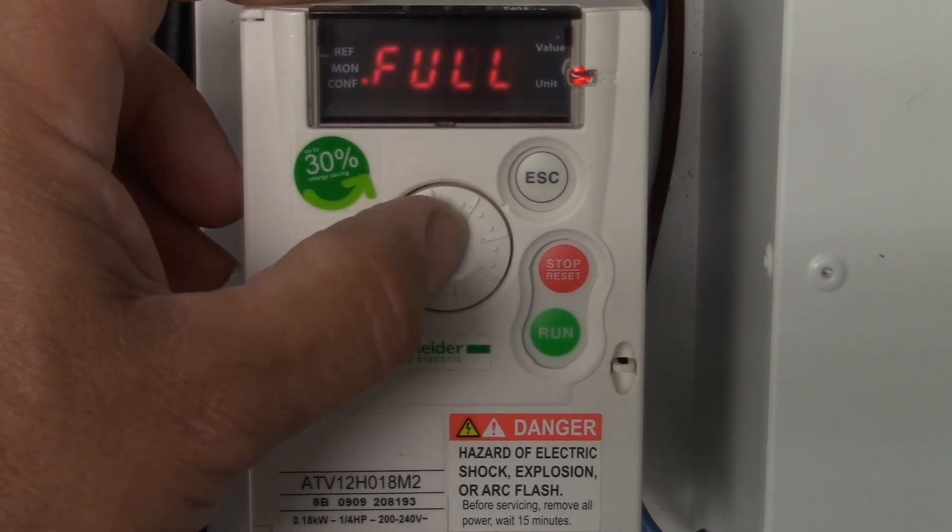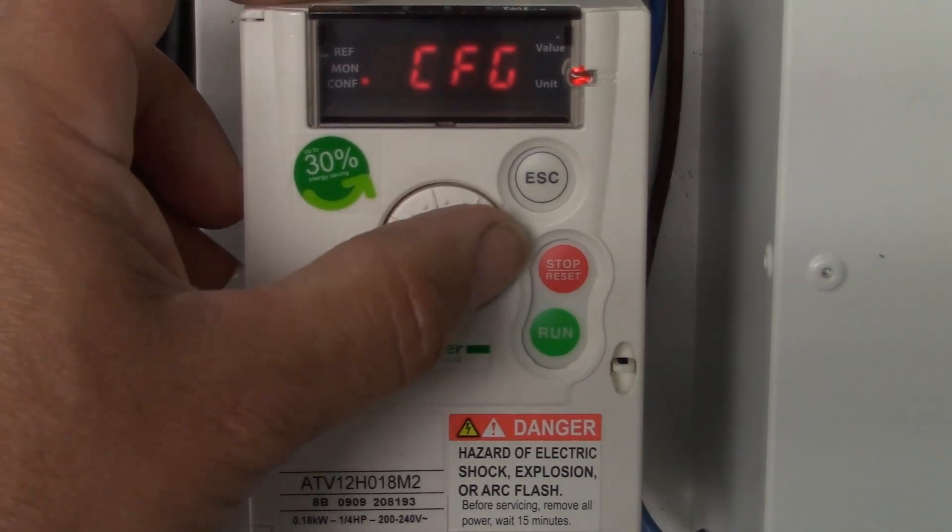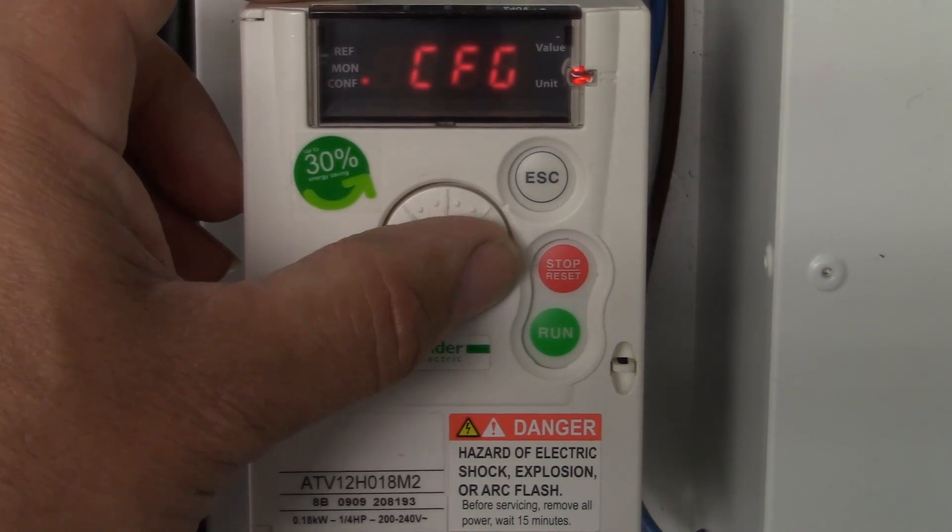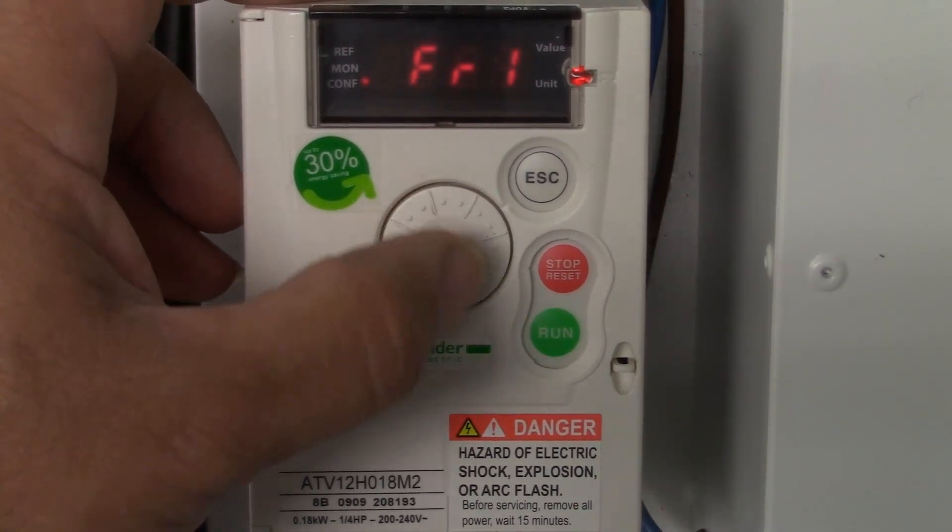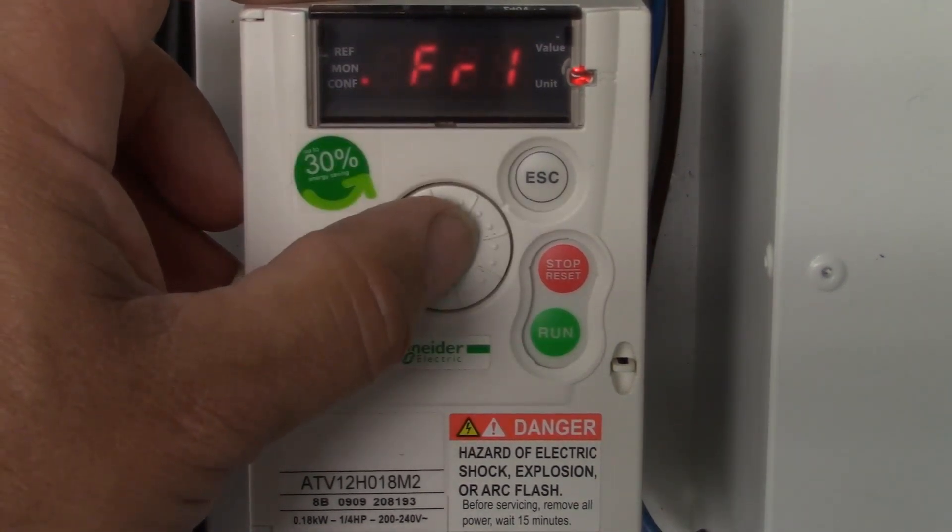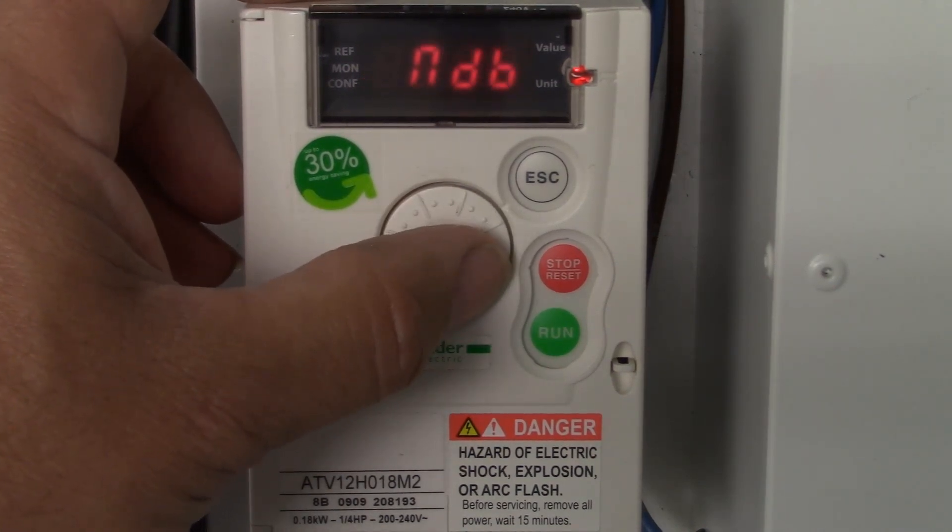First off we go to the config menu, then the full menu, then scroll down to the CTL and change FR1 to a different setting other than AI1. I am going to use the A1U1 for this example using the dial for reference.